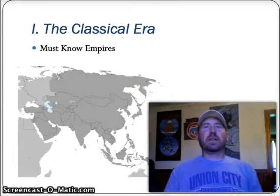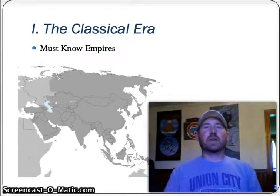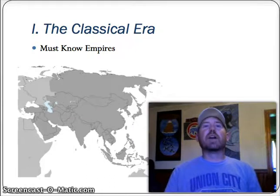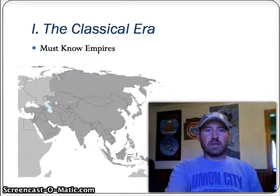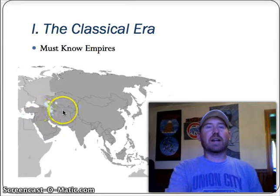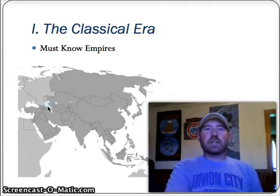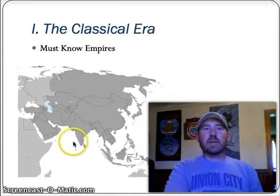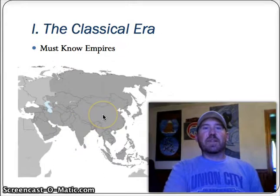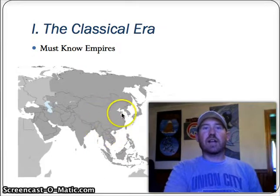Now we move on to the actual empires we'll be talking about in this period — these are called must-know empires. You need to know who they were and where they were located because you might see them on a map. The first is the Persian Empire, located roughly in the Middle East region. Next are the South Asian or Indian empires of the Gupta and Maurian, located in India. Then we move to East Asia — China — and look at the Qin and the Han. Anything in that region will be the Qin and Han during this era.